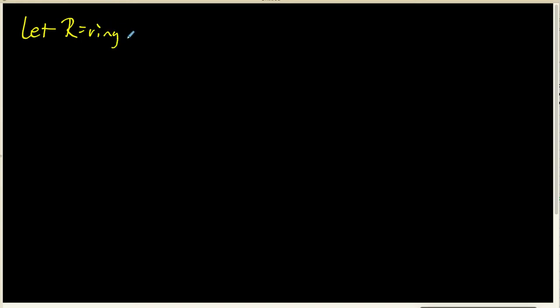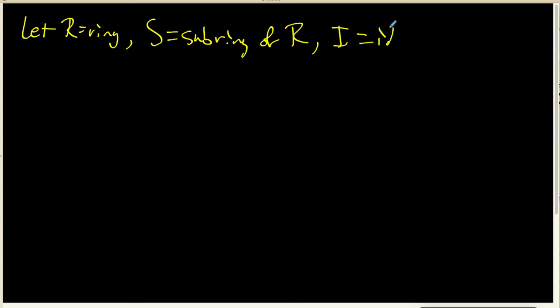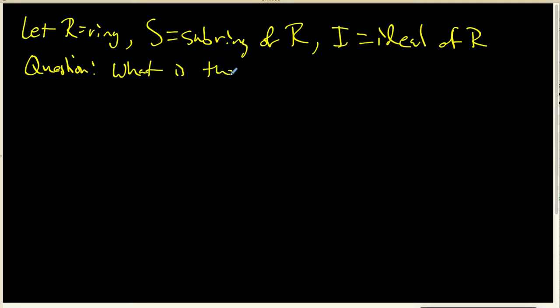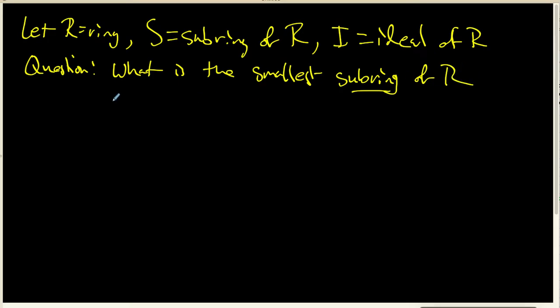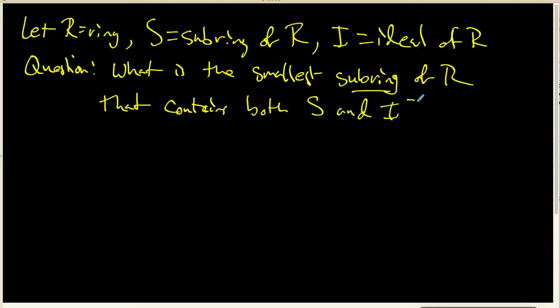In this video, we are going to let R be a ring, S is going to be a sub-ring of R, and I is going to be an ideal of R. And the question that I want to look at in this particular video is: what is the smallest sub-ring of R that contains both the sub-ring S and the ideal I?